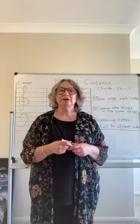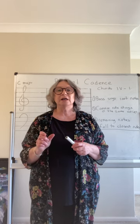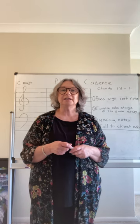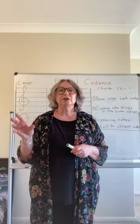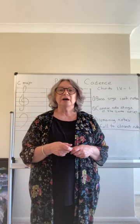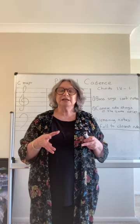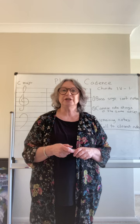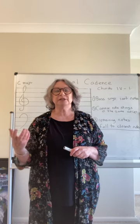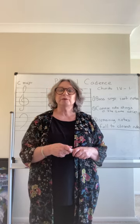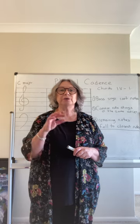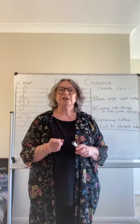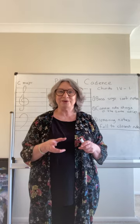Today we're talking about plagal cadences, which is chord four going to chord one — the subdominant going to the tonic. Like the perfect cadence, it is a very final-sounding chord, so you want to save it for the end of a piece of music, because in the middle it sounds finished when you actually want to keep going. Today is just an isolated example of a plagal cadence.